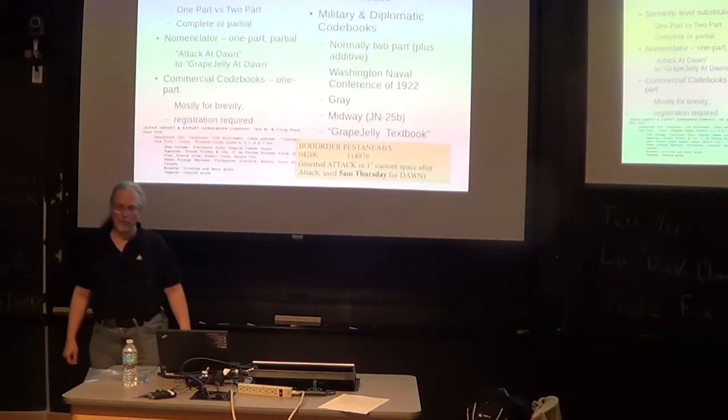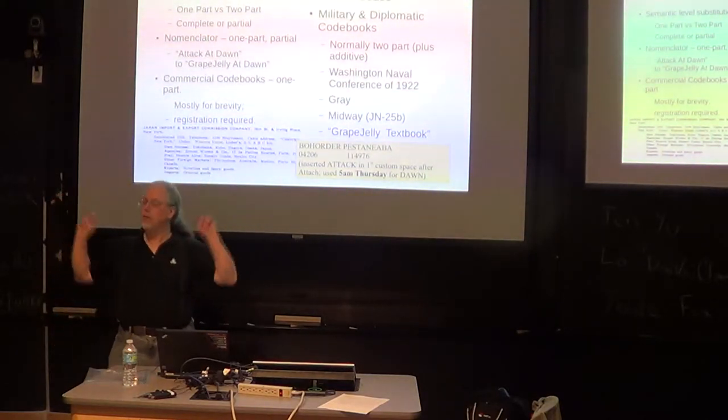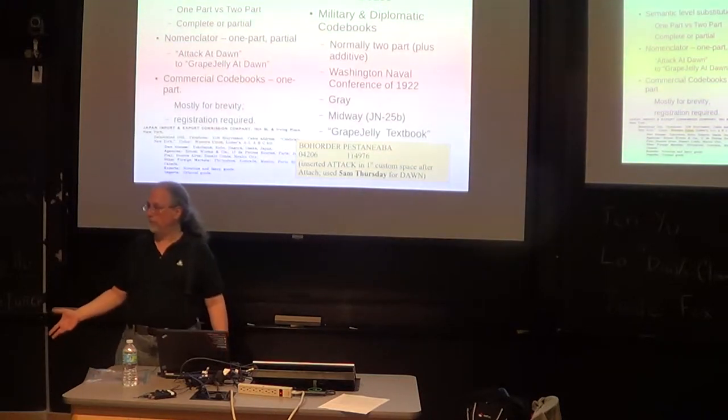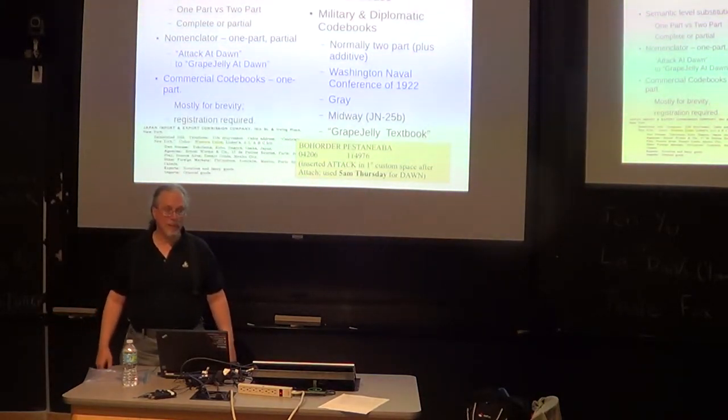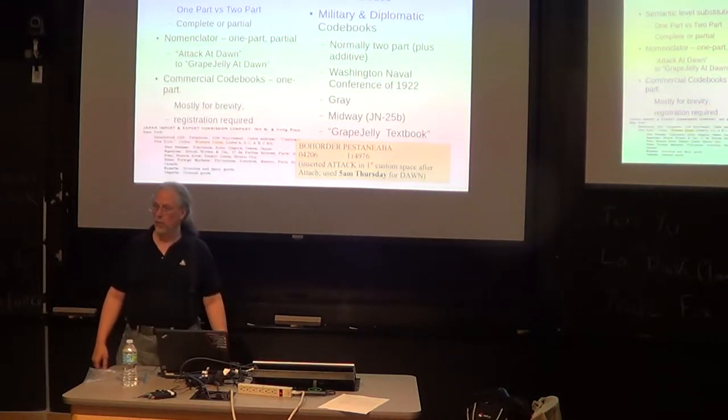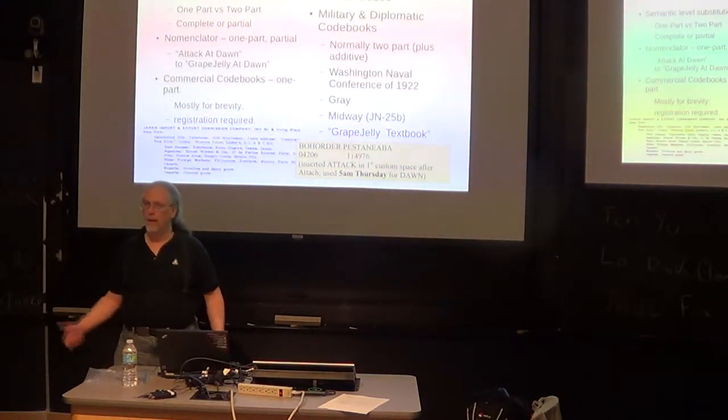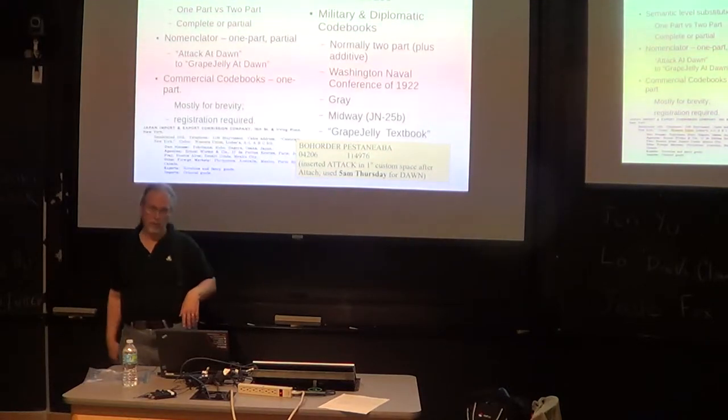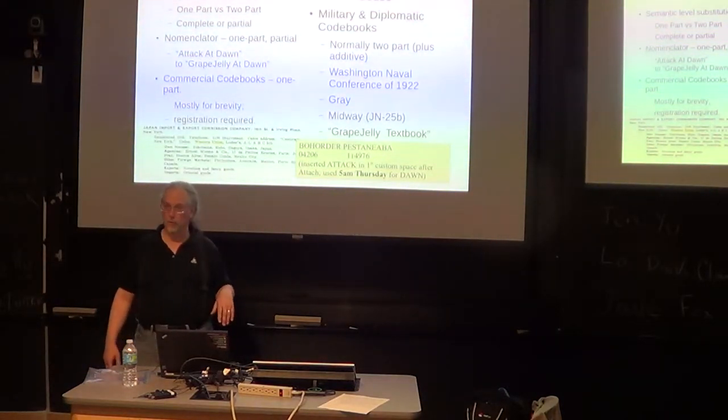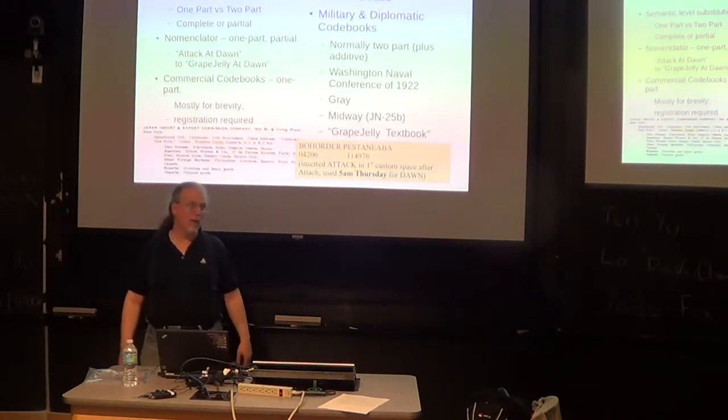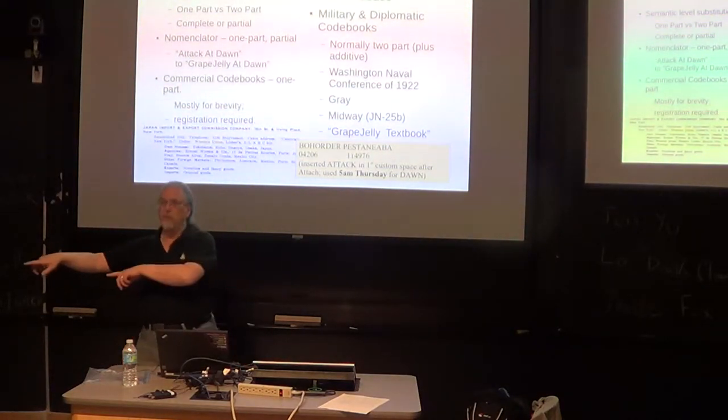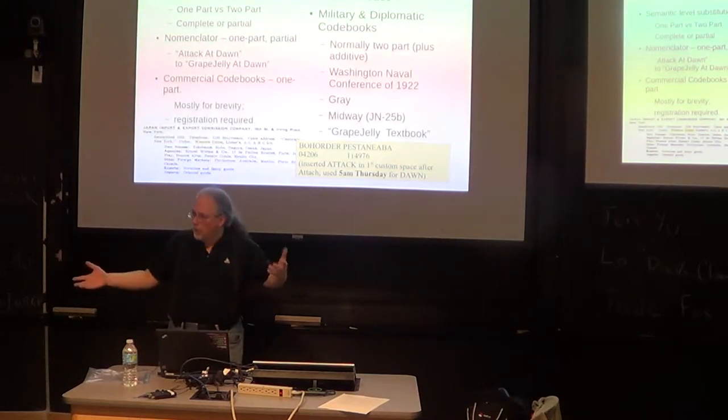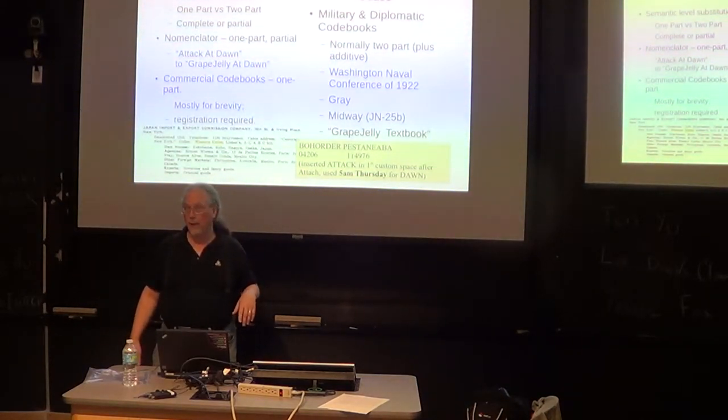You used this to reduce your telegram charges. The telegram company charged less for pronounceable words than for garbage. So the code book has pronounceable words. In ancient history, the earliest codes were what are called nomenclators. They have replacements for names, replacements for nouns. The little words, your articles, your prepositions and things would be left as is, and you just replace Jerry in the message with Burger King as his code name. That was a nomenclator.